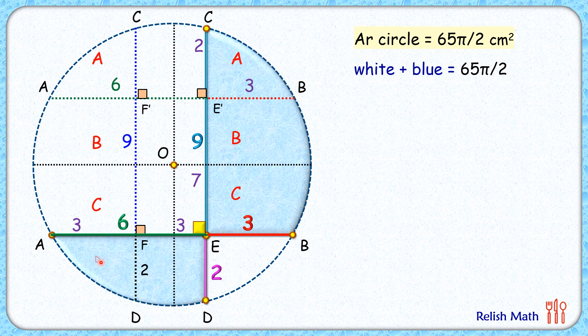If this blue region here is D, then its mirror image, that's the white region, will also be D. If this region is E, this region will also be E.